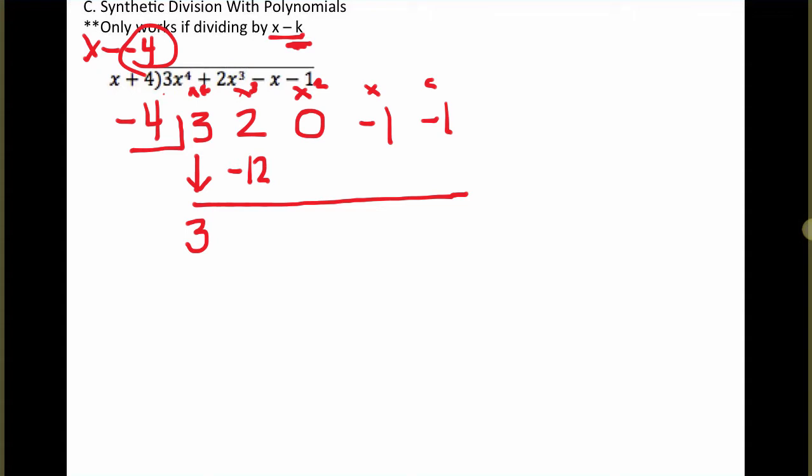This is where it's different from long division. We are going to add every time. So 2 plus a negative 12 is a negative 10, and then we multiply again by the number in the box, 40. And we add. 0 plus 40 is 40. 40 multiplied by a negative 4 is a negative 160. And again, we add going down. It's negative 161. And then we multiply by the number in the box. Negative 161 multiplied by a negative 4 is 644. And then we add a negative 1 to that, and we get 643.